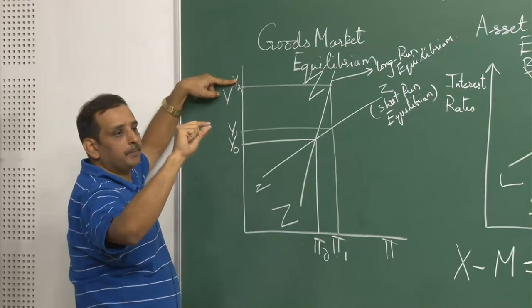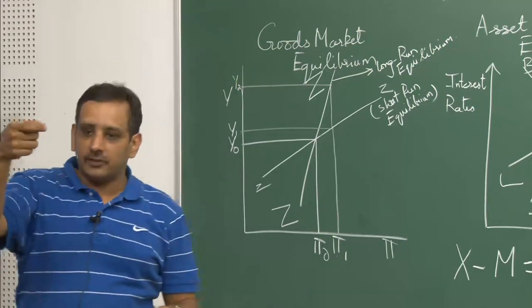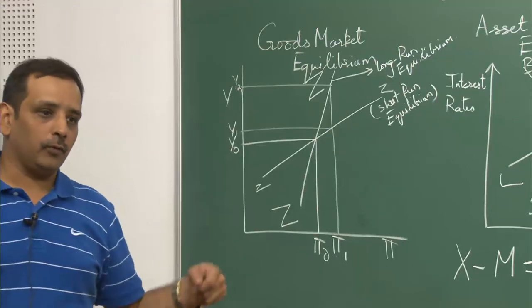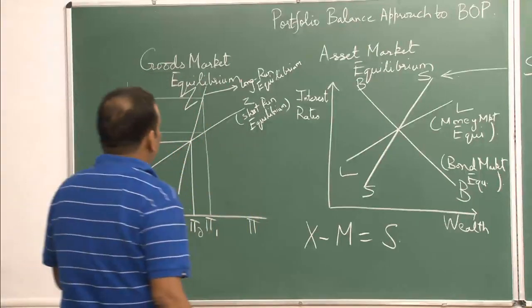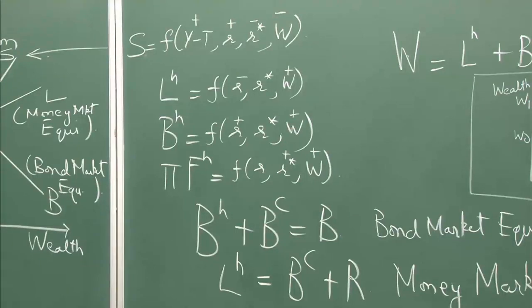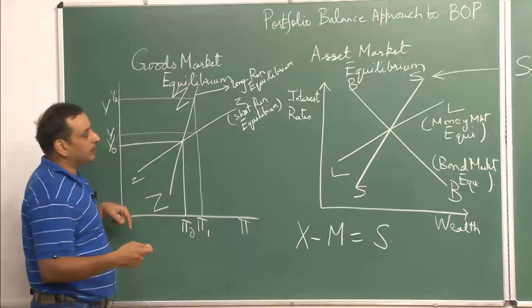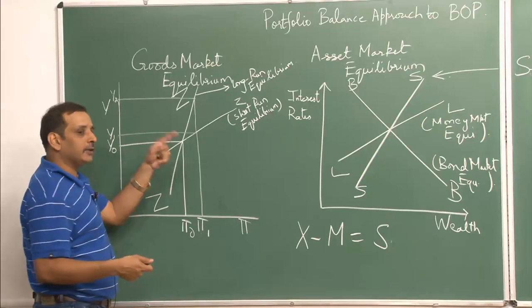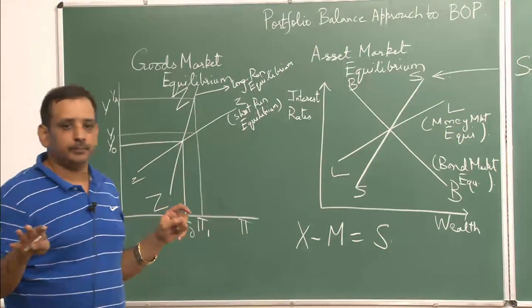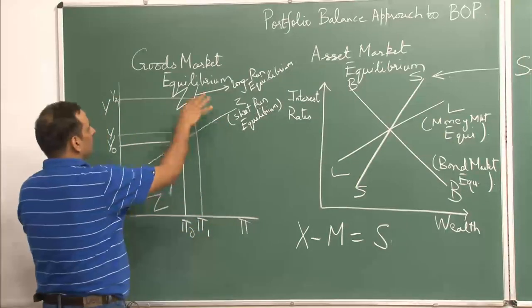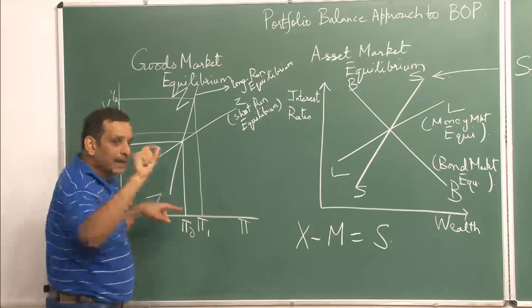Each point on the big ZZ curve shows that savings are zero and there is zero current account balance, but it shows different levels of wealth w. Higher incomes lead to higher imports, so any current account surplus is wiped out. The current account surplus comes back to zero, and the wealth going up reduces savings back to zero. So in the long run — wealth goes up, incomes go up, savings come back to zero — you have a balance of payment equilibrium.